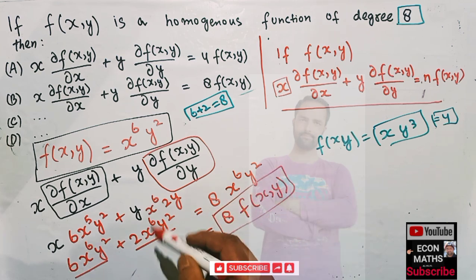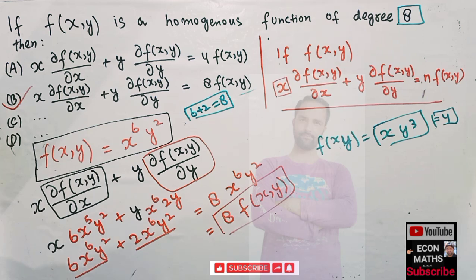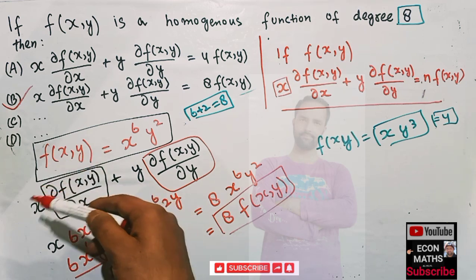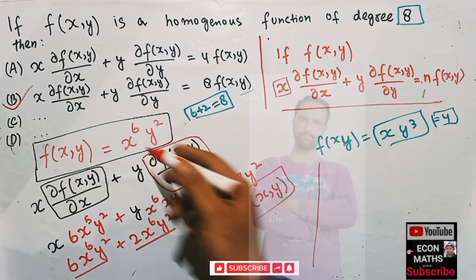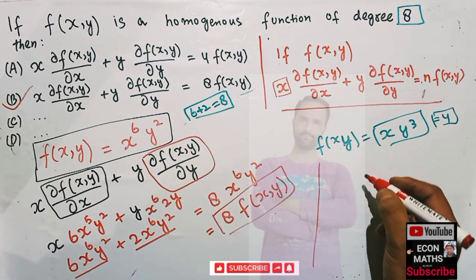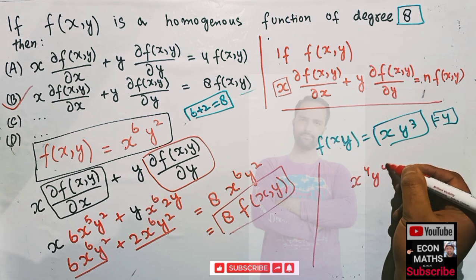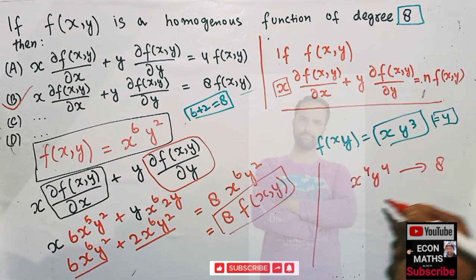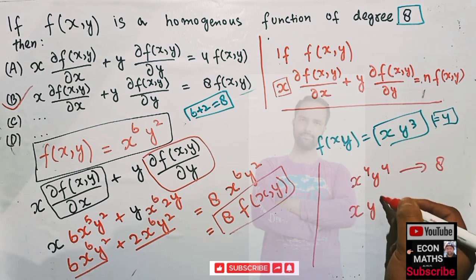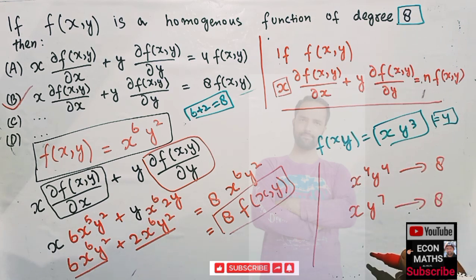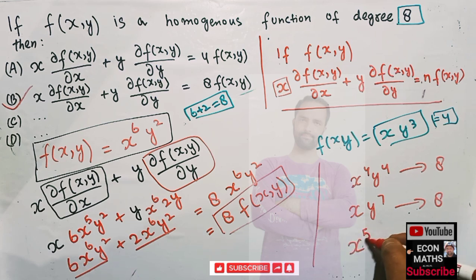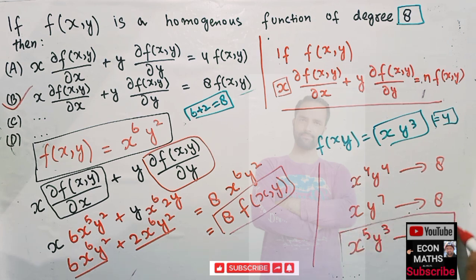You can take any function of degree 8 — for example x⁴y⁴, which is also of degree 8, or x⁷y, which is also of degree n, or x⁵y³, which is also a homogeneous function of degree 8. I just picked one particular example, but any homogeneous function of degree 8 will give the same result.